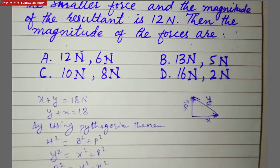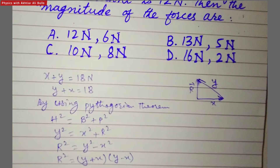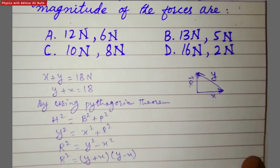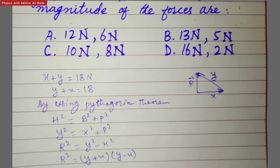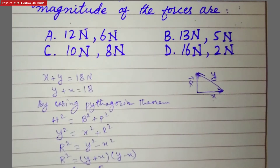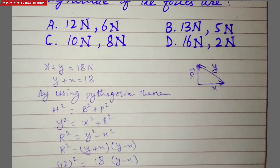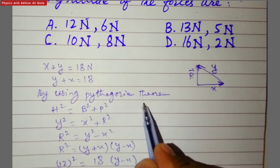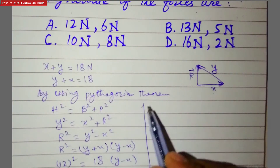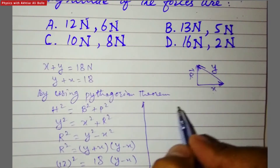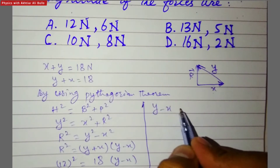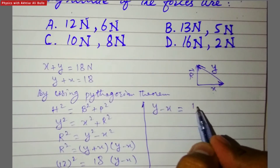Since y plus x equals 18 and the resultant r equals 12 newton, the square of the resultant is 12 squared equals 18 into y minus x. We need to calculate y minus x, so y minus x equals 144 divided by 18.